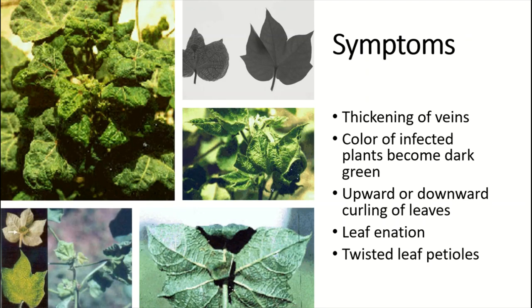What are the symptoms? The thickening of veins. The color of infected plants becomes dark green — this is the dark green color. There is upward and downward curling of leaves — this is the downward curling of leaves, and this is the upward curling of leaves. There is also leaf enation: a small leaf develops on the leaf, which is called leaf enation. These are the typical symptoms of cotton leaf curl disease.